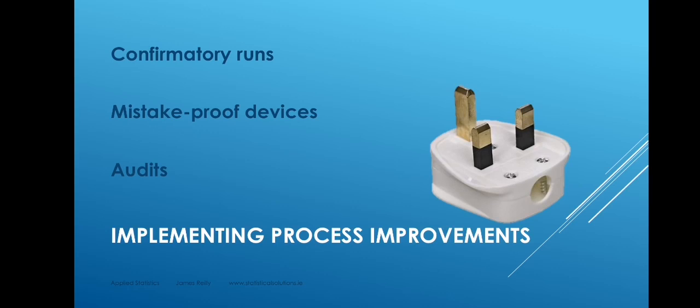When you have found that one version of a process is better than another, the best way to make that change is to use a mistake-proof device. For example, in one of our experiments we found that SUVs use more fuel than hatchbacks and saloons, so we would like employees to discontinue using SUVs. The best way is to make it physically impossible — for example, erecting a barrier at the entry gate so that an SUV simply will not fit under it. A three-pin plug is a good example: it can only be inserted into the socket the right way around. A mistake-proof device is a physical arrangement which makes it impossible for the inferior choice to be made.